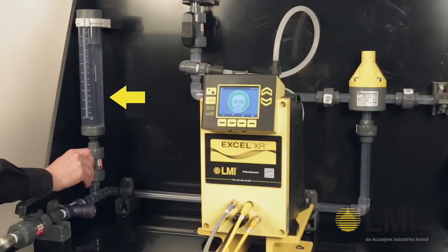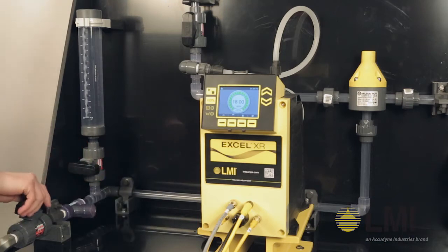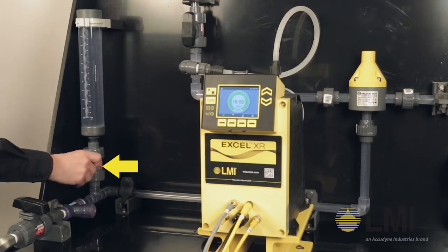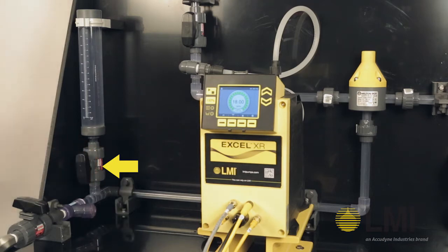Once you stop the pump, fill your calibration column. Then take the pump out of service by closing the valve to the reservoir tank and open the valve to the calibration column. Be sure to make note of the starting fluid level.